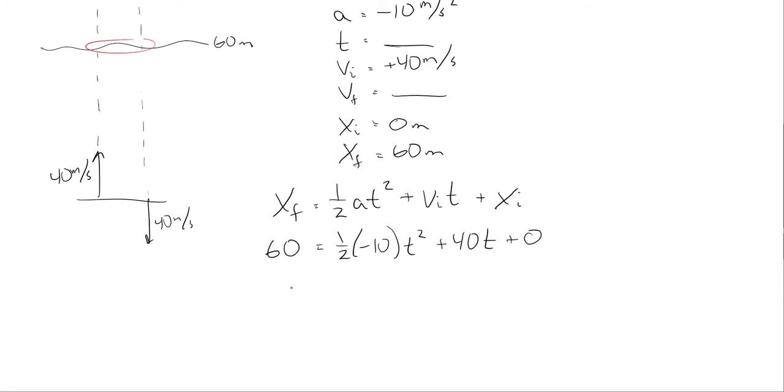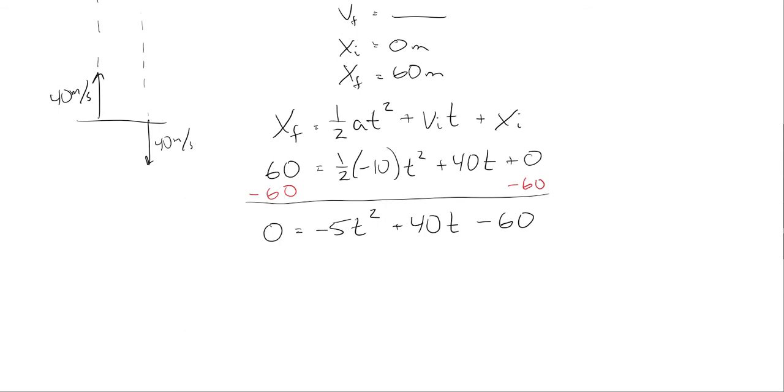So I'm going to subtract 60 from both sides because anytime we're solving a quadratic, you want to set it equal to 0. And so I'm going to get 0 is equal to half of negative 10 is negative 5 T squared plus 40 T minus 60.